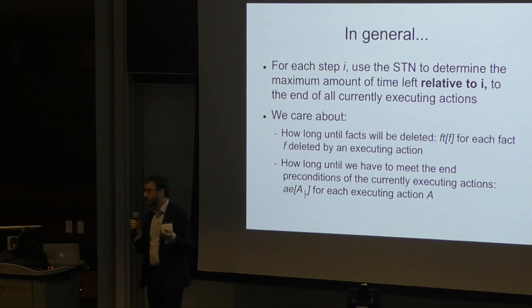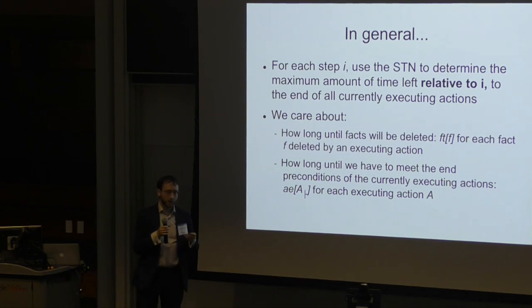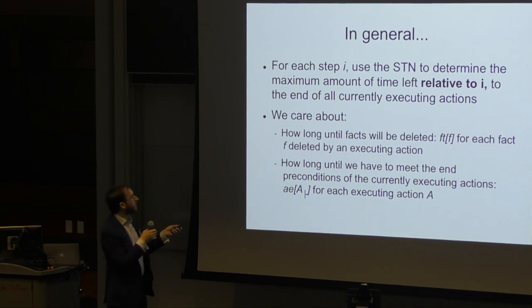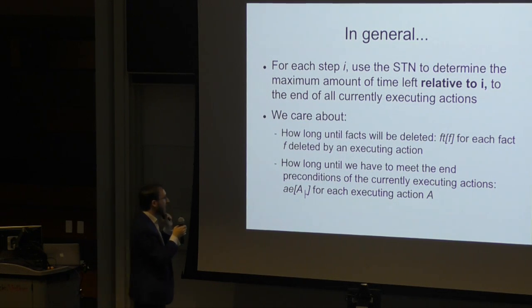So in general what are we going to do? We are evaluating a state using a relaxed planning graph heuristic and we have the plan that reached that state and we have the STN that goes with that plan. So for each step I in the plan, we're going to use the STN to find this maximum amount of separation between that step and the end of all currently executing actions. In my example I just have one of these, it's the work action. In theory I could have several such actions.